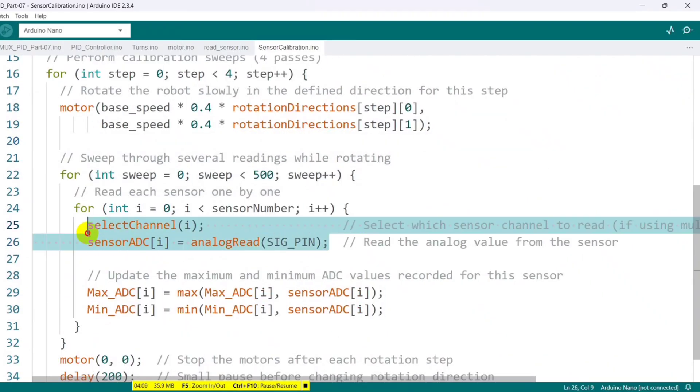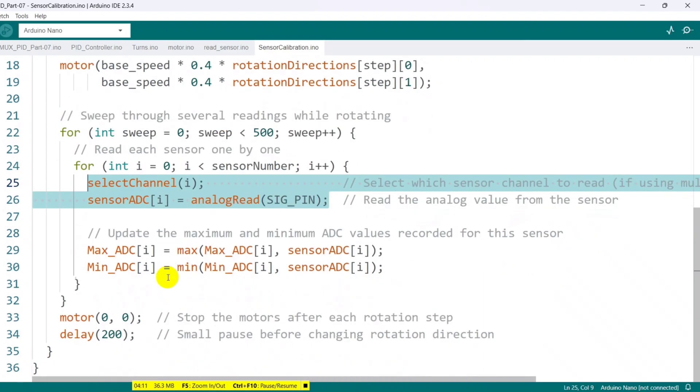This section stores the maximum and minimum analog readings of each sensor into the max ADC and min ADC arrays. Once this stage is complete, the robot stops.